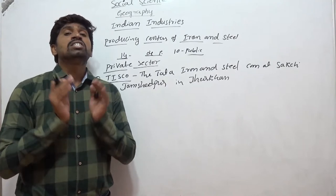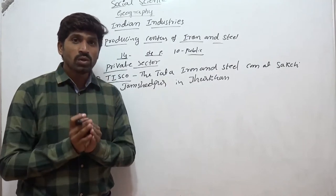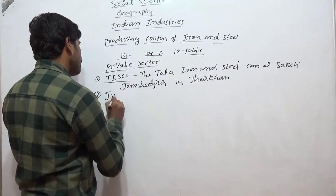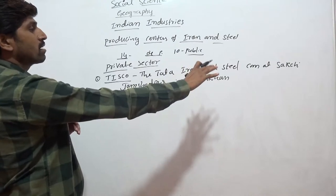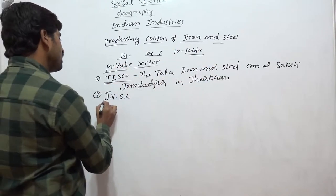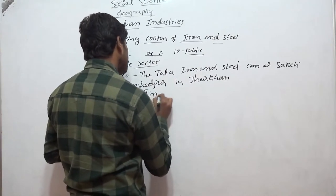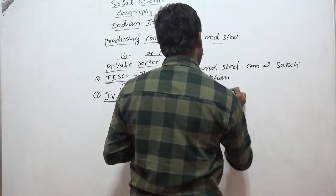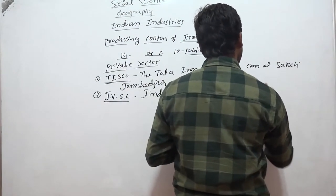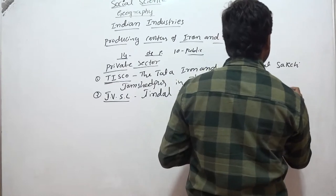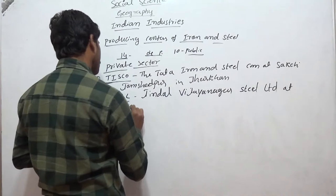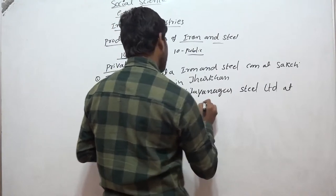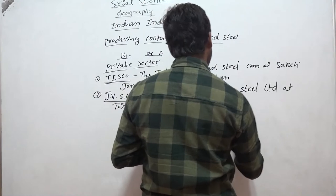The second private sector industry is Jindal Vijayanagara Steel Limited at Toranagallu in Ballari district, Karnataka. It is popularly known as JVSL.